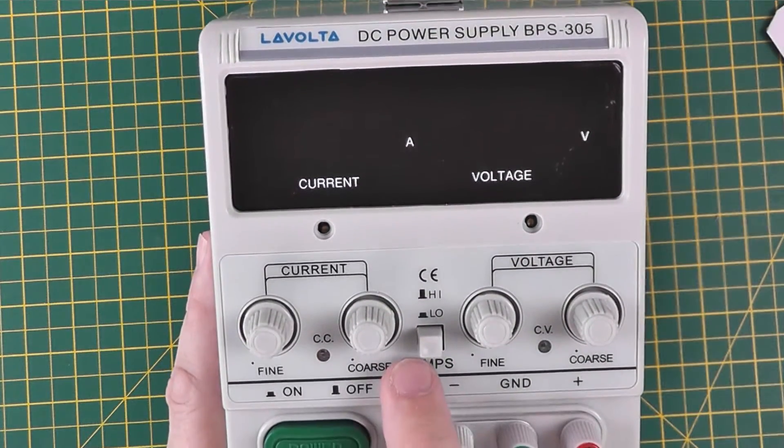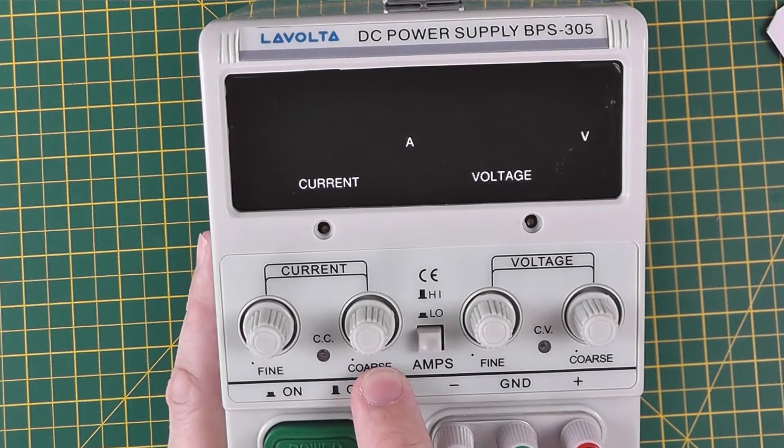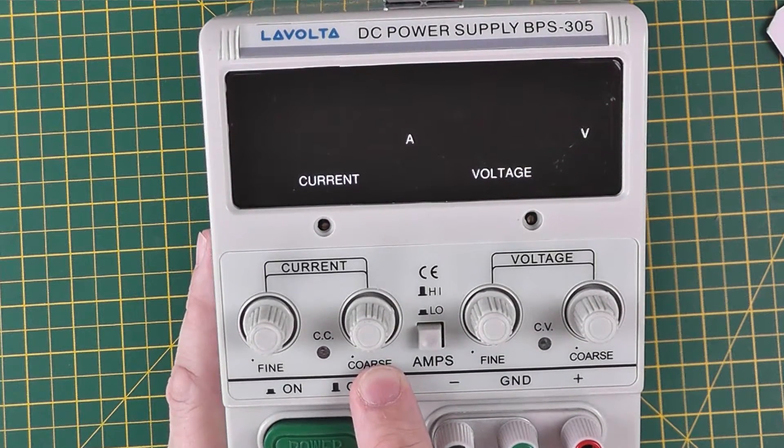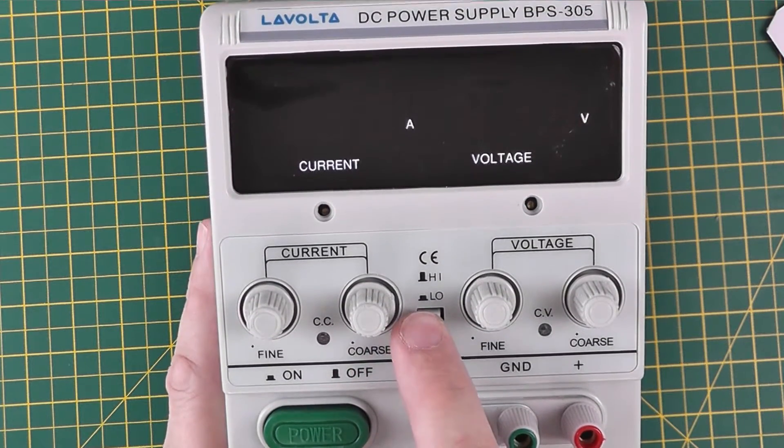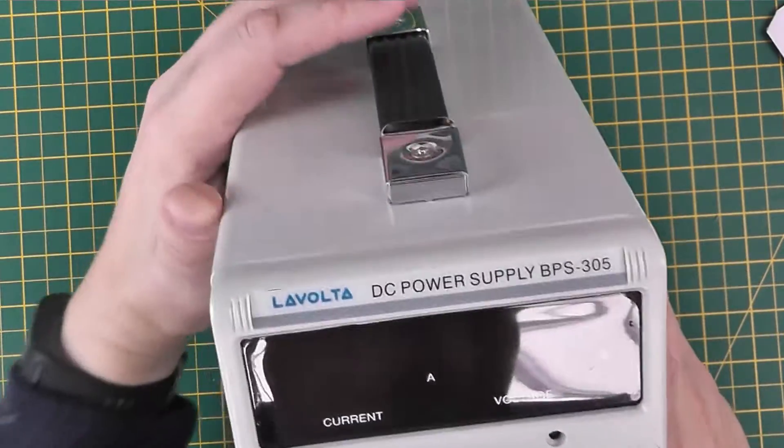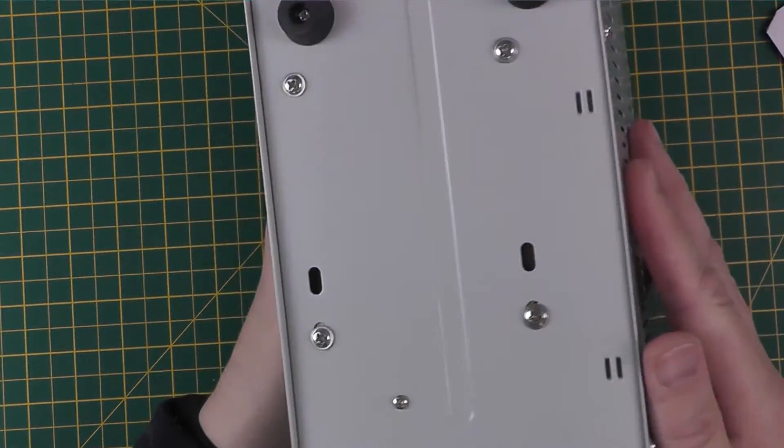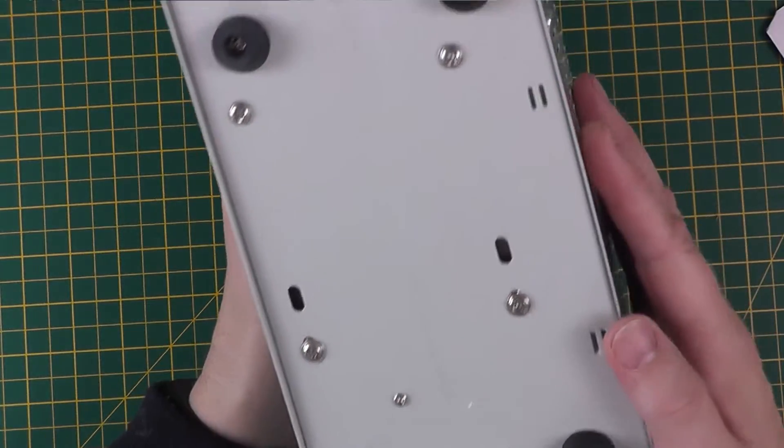There's a center button here which alternates between high and low, we'll look at that when we turn it on. On the bottom, four rubber feet, good solid construction.